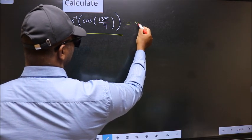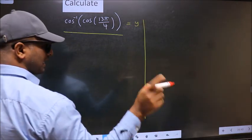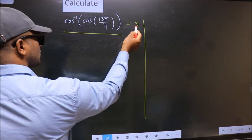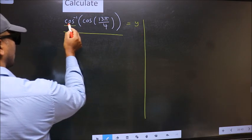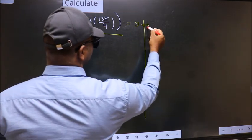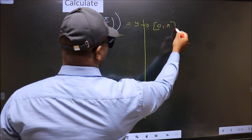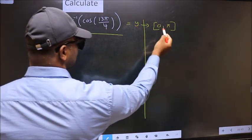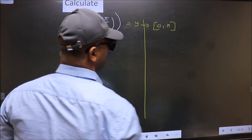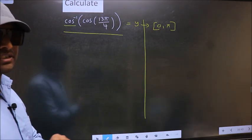So let us take the answer to be Y. And the condition is Y should lie in the range of cos inverse, which is 0 to π. Our answer should lie in this interval. Clear with this point?